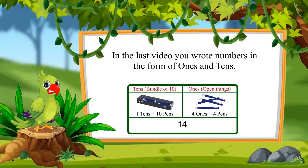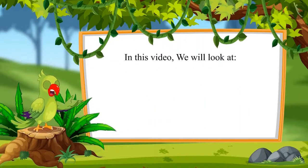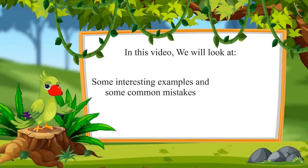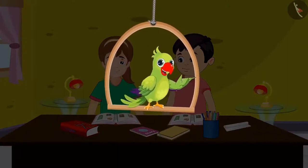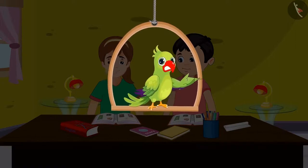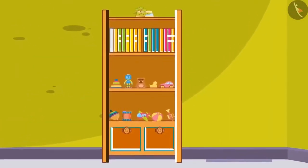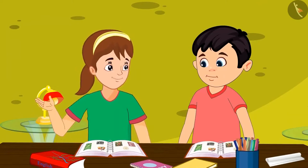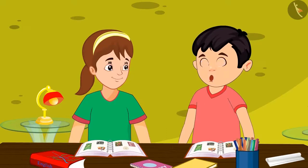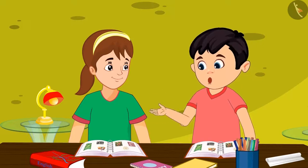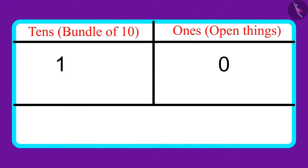So, children, in the last video, you wrote numbers in the form of 1s and 10s. In this video, we will look at more interesting examples and will learn about some common mistakes that we should not do. Chotu and Aarti are studying together at Chotu's home. They studied about 1s and 10s yesterday at school. Aarti notices the toys in Chotu's cupboard. Oh wow, you have so many colorful toys. How many toys would these be, Chotu? Come, let's play a game where I will only tell you how many 1s and 10s are there in the number of objects, and you will have to tell that number.